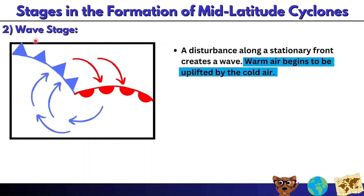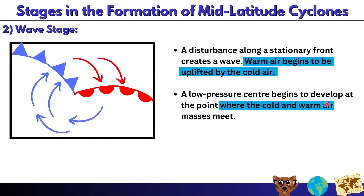Stage two is the wave stage. In the diagram we can see a cold front and a warm front forming the shape of a wave. The warm front has semi-circles along the line while the cold front has triangles. A disturbance along the stationary front creates a wave, and warm air begins to be uplifted by the cold air since warm air is less dense. A low pressure center begins to develop at the point where the cold and warm air masses meet — in a cyclone, the lowest pressure is found in the center.